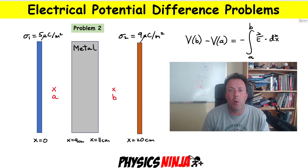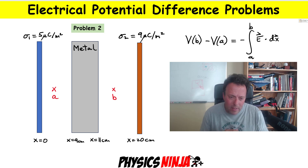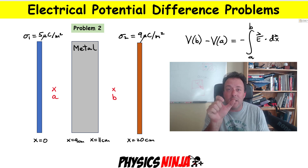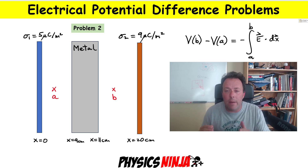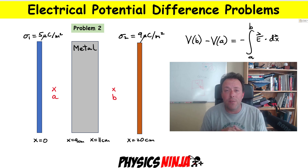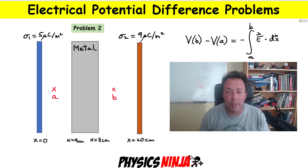In the second problem, I'm going to insert a chunk of metal. The metal has a thickness of two centimeters, and again my goal is to evaluate the potential difference between points A and B without changing the charge densities on those outer plates.